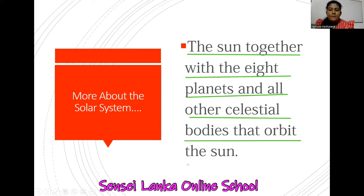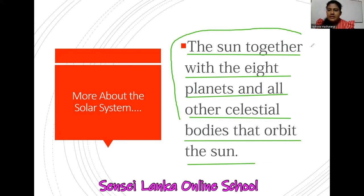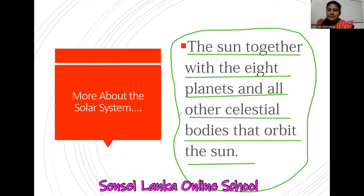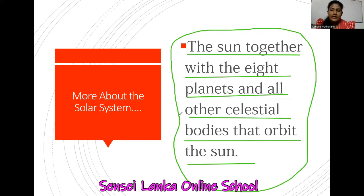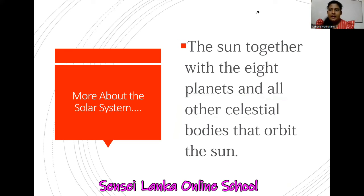The sun, together with the eight planets and all other celestial bodies that orbit the sun — this is another definition for the solar system. I think this definition is easier than the earlier one — very short and sweet. How many planets are there in our solar system? There are eight regular planets. The sun together with the eight planets and all other celestial bodies that orbit the sun is called the solar system. Keep this definition in your mind.